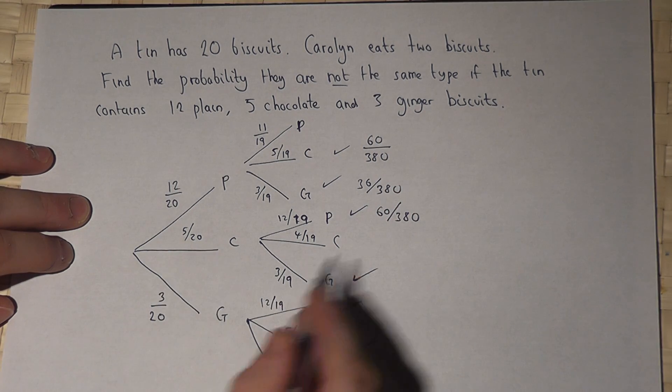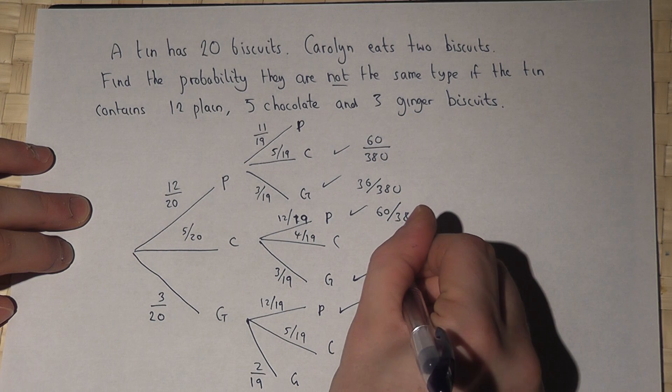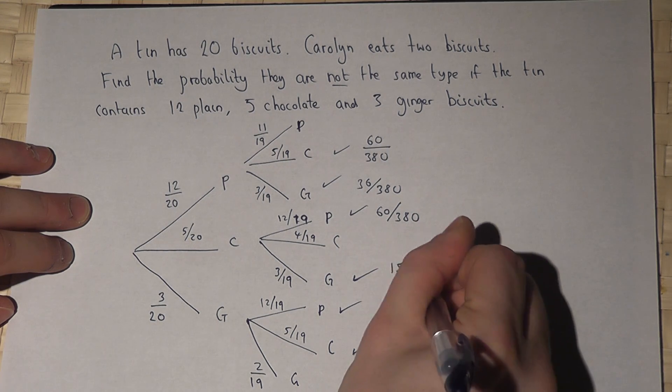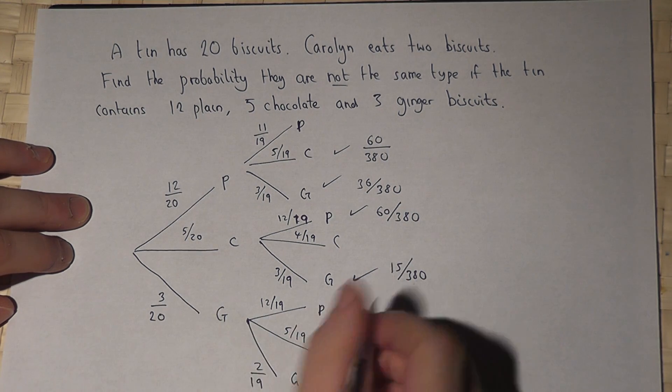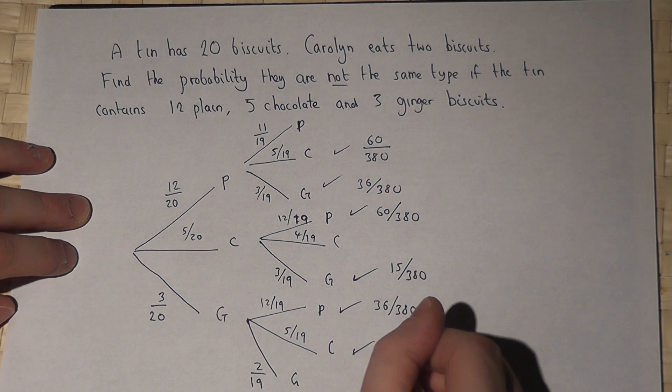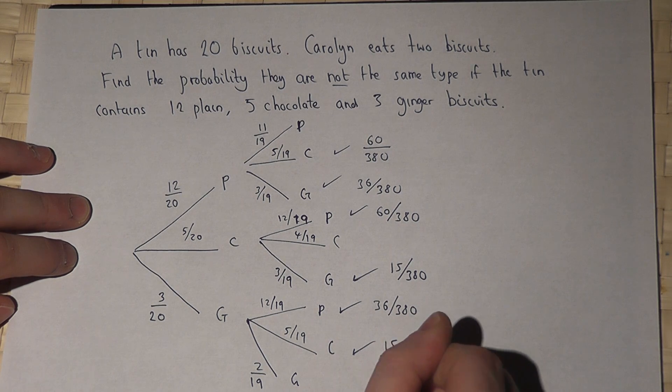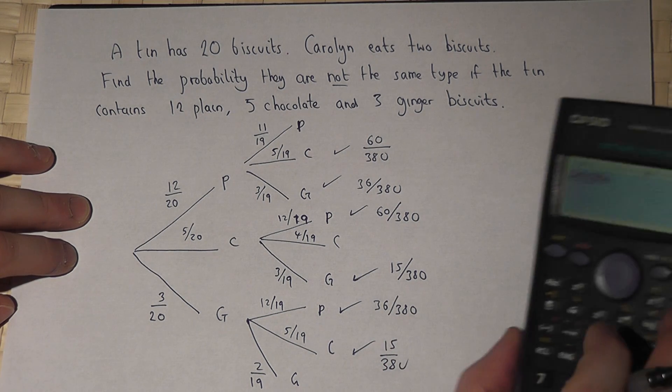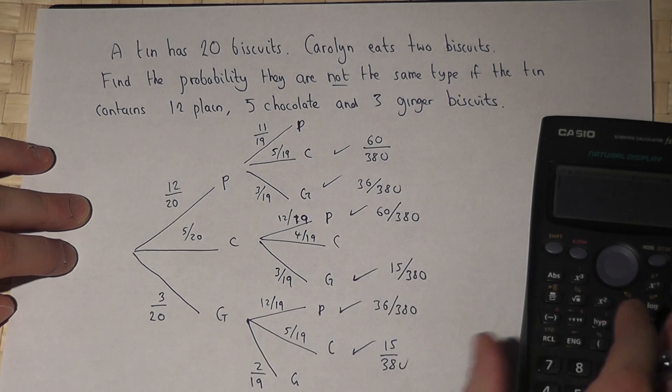5 times 3 is 15, so 15 over 380. 3 times 12 is 36 over 380. And 3 times 5 is 15 over 380. So I then just add together all the fractions.